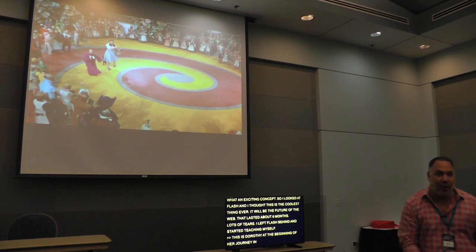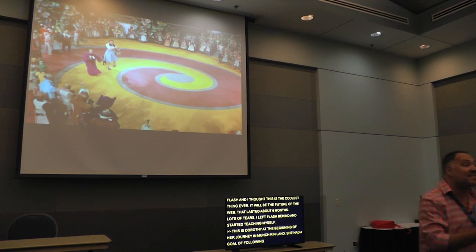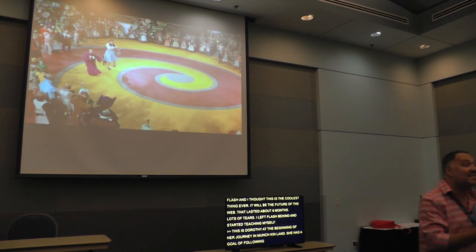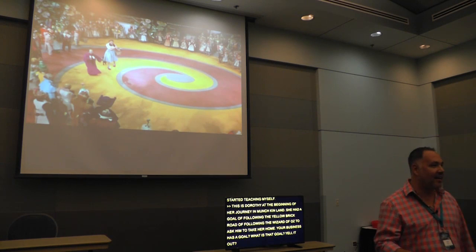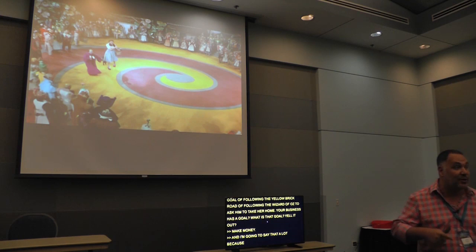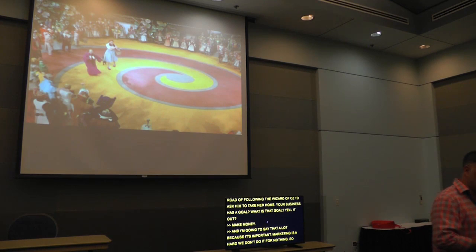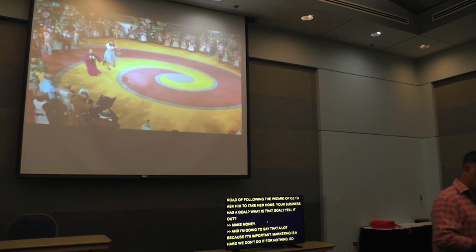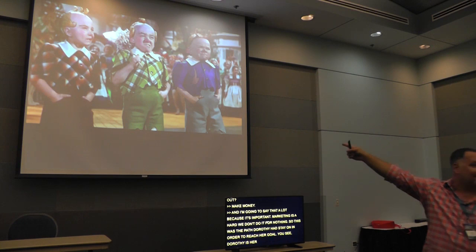This is Dorothy at the beginning of her journey in Munchkin Land. Dorothy had a goal of following the yellow brick road to find the Wizard of Oz to ask him to take her home. Your business has a goal as well — make more money. Marketing is a hard task. We don't do it for nothing; we do it to make more money. The yellow brick road is WordPress.